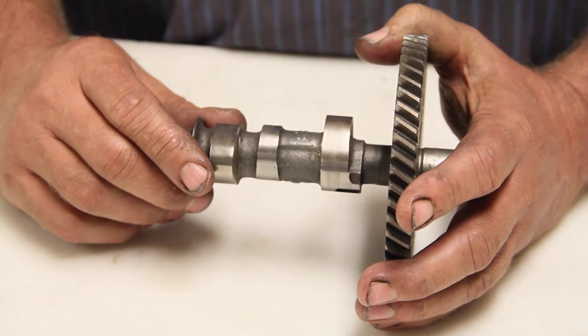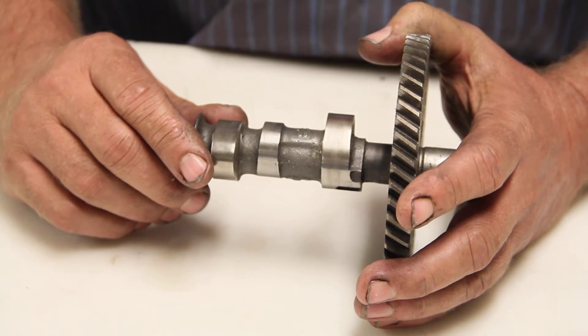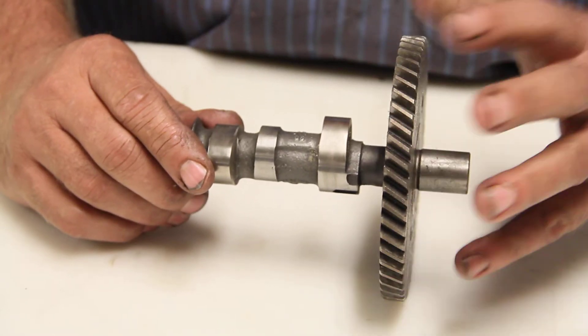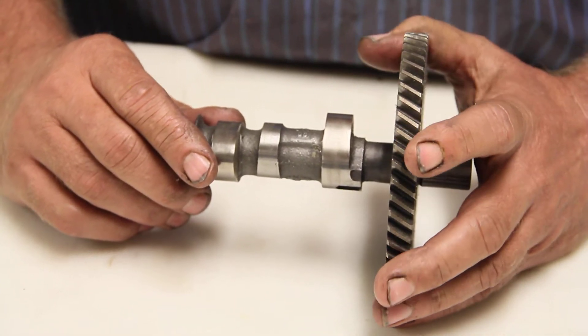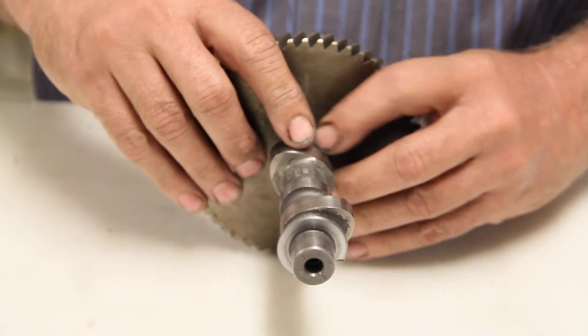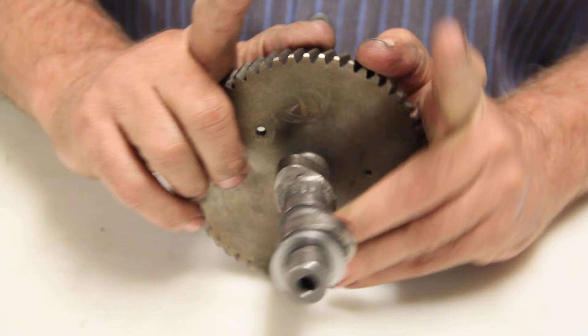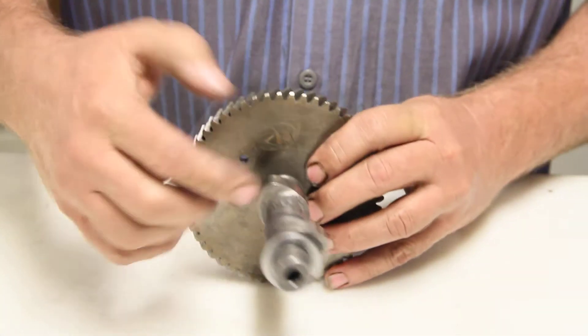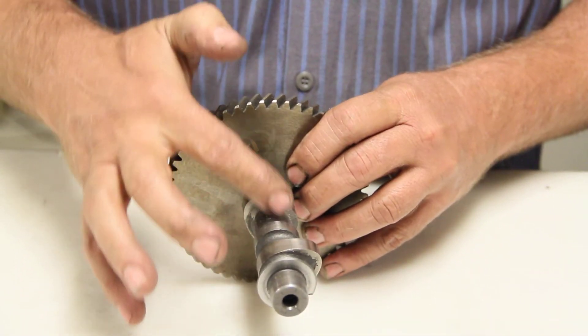If the camshaft doesn't have any timing marks on it and you don't know where to put the cam to get started, especially with adjustable gear, all you have to do is put the camshaft on overlap. Overlap is when both valves at the top of the bore open a little bit. This is the overlap area of the cam.